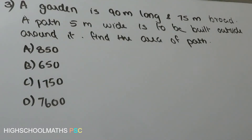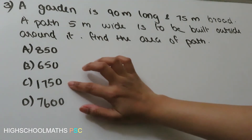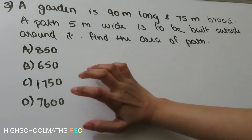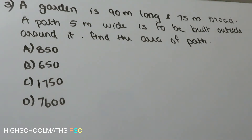This garden is 90m long and 75m broad. A path 5m wide is to be built outside around it. Find the area of the path. The options are 850, 650, 1000, 750, and 7600.